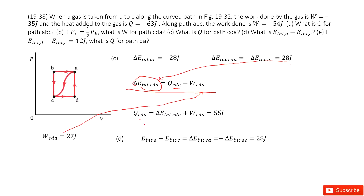Can you find the energy difference — the internal energy change from A to C? This part we can write as the internal energy change from C to A, which is just the opposite direction of the internal energy change from A to C. So add a negative sign here; we get the answer.